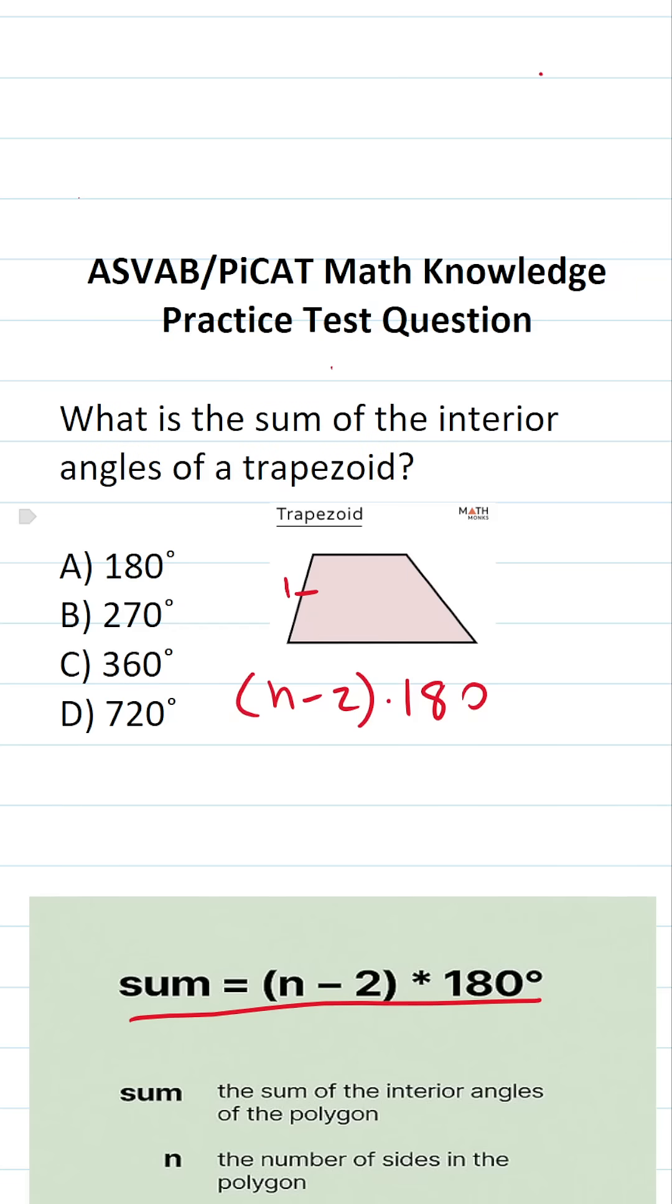So it has 1, 2, 3, 4 sides. So n in this case is going to be 4. Let's plug this in.